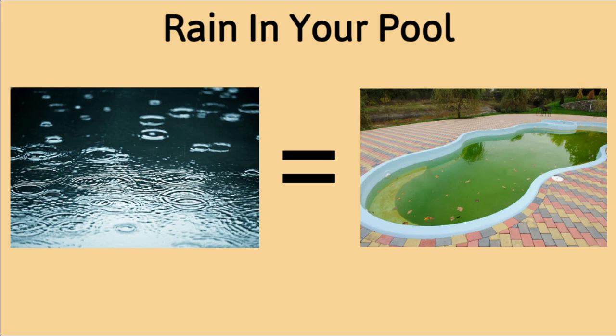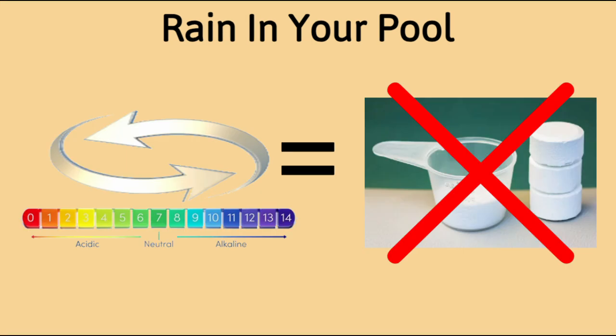This is the reason why your pool can become cloudy or even green after a heavy rain. As the pH level fluctuates, the ability of chlorine to sanitize your pool decreases.